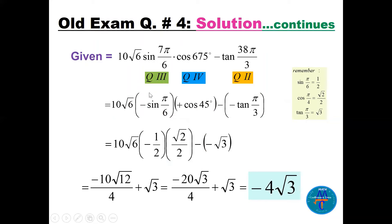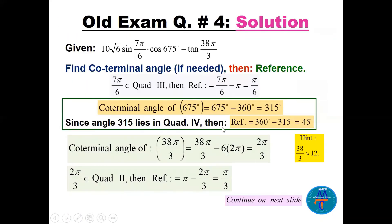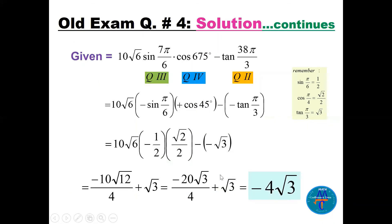Now apply quadrant signs. sin(7π/6) is in quadrant 3: sine is negative, so −sin(π/6). cos(675°) is in quadrant 4: cosine is positive, so +cos(45°). tan(38π/3) is in quadrant 2: tangent is negative, so −tan(π/3).